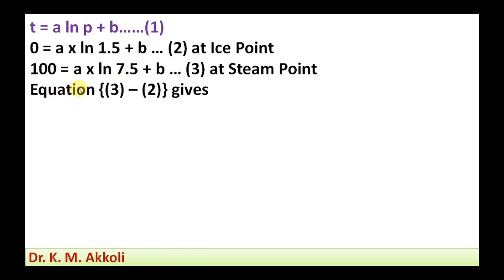Then here equation 3 minus 2 gives: equation 3 minus 2, that is 100 minus 0, that will be 100. A is taken common. Then this is ln 7.5 minus ln 1.5. And b and b get canceled.